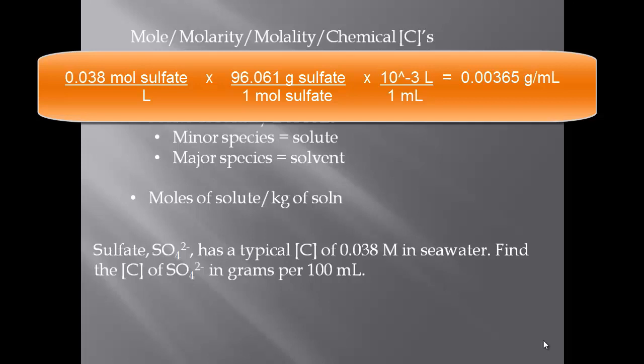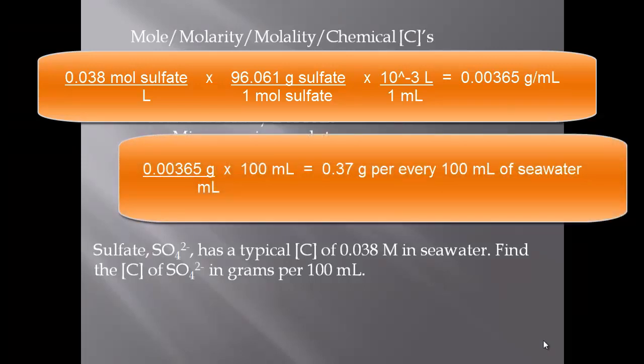The molar mass of sulfate is 96.061 g/mol, so in one mole of sulfate there are 96.061 grams. Then convert liters to milliliters: in 1 mL there is 1 × 10⁻³ liters, so the power of 10 goes on top with the liter. That gives you the concentration in grams per mL: 0.00365 g/mL. Since they want grams per 100 mL, multiply by 100 to get 0.37 grams per 100 mL of seawater — with two significant figures.